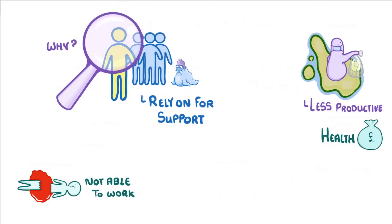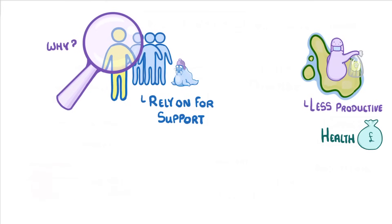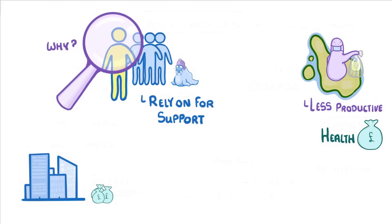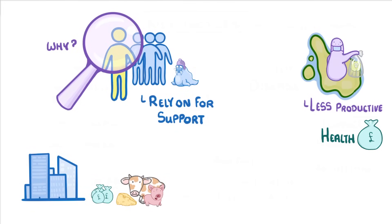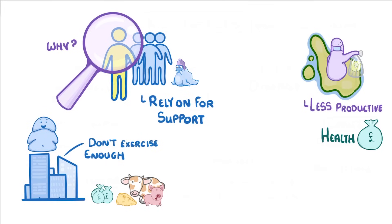What scientists have found is that certain groups of people are more likely to have certain risk factors than others, and so those groups have a higher incidence of the associated diseases. For example, globally, people in developed countries like the UK with higher incomes are more likely to eat too much unhealthy food and live a sedentary lifestyle where they don't exercise enough. Risk factors like these are part of the reason that obesity and its associated diseases are such a problem in developed countries.